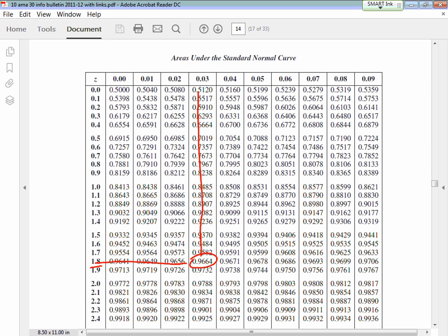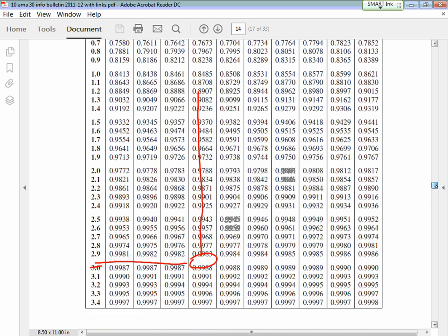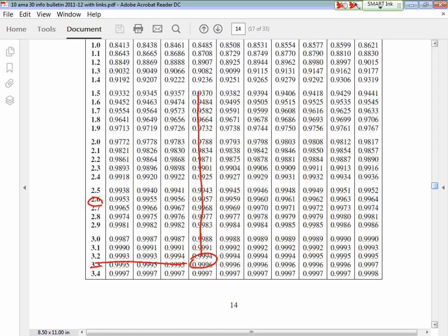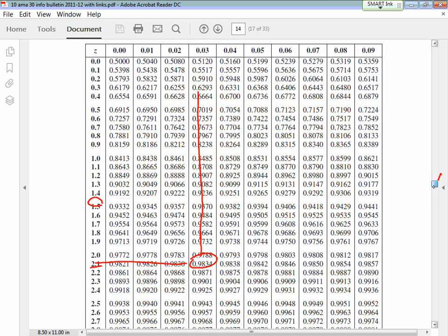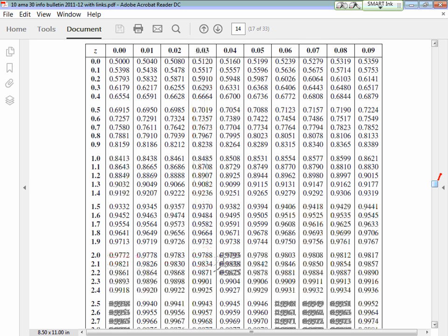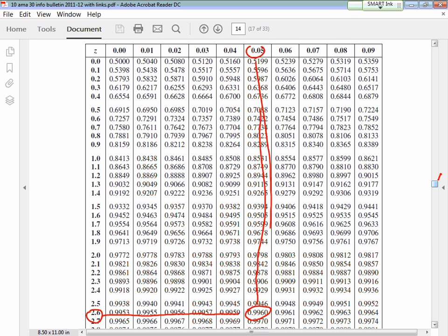I'll do the other one, which was 2.65. For that I'll have to scroll a little bit. 2.6 and 5. I'm going to draw the line over, figuring this out, going down, going straight down. 0.9960.